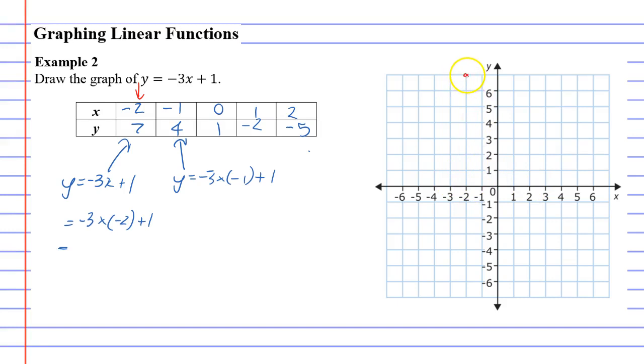When x is negative 1, y is 4. Negative 1, 4. Then we go 0, 1.